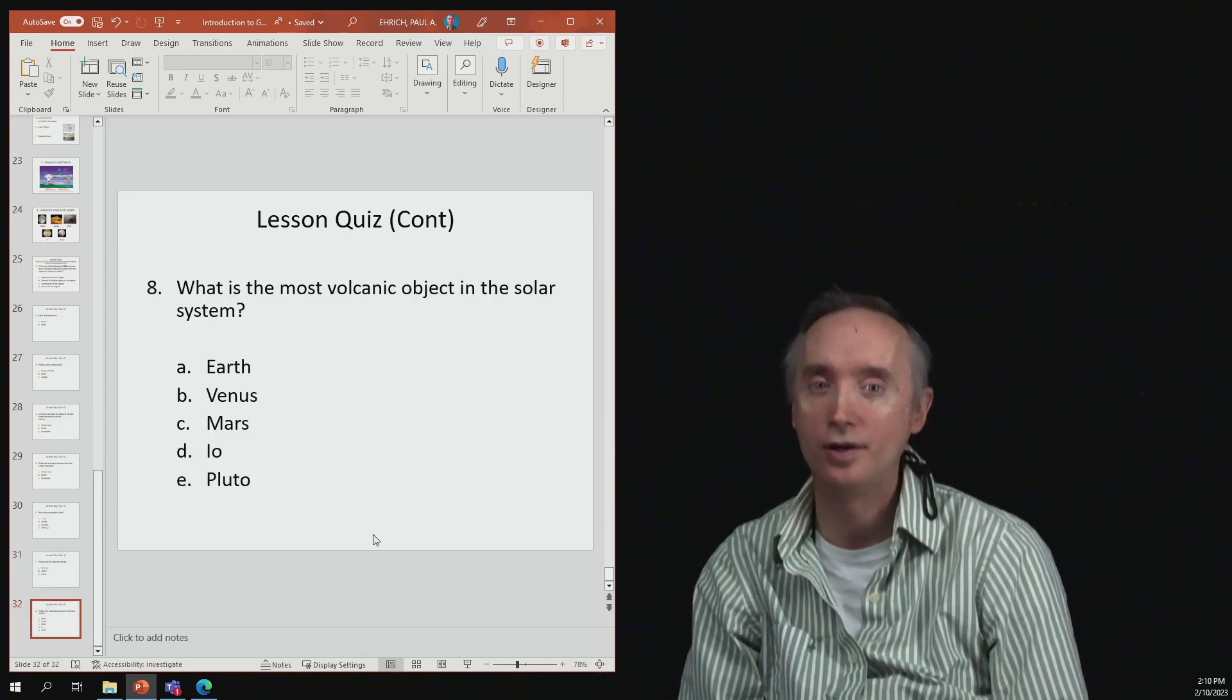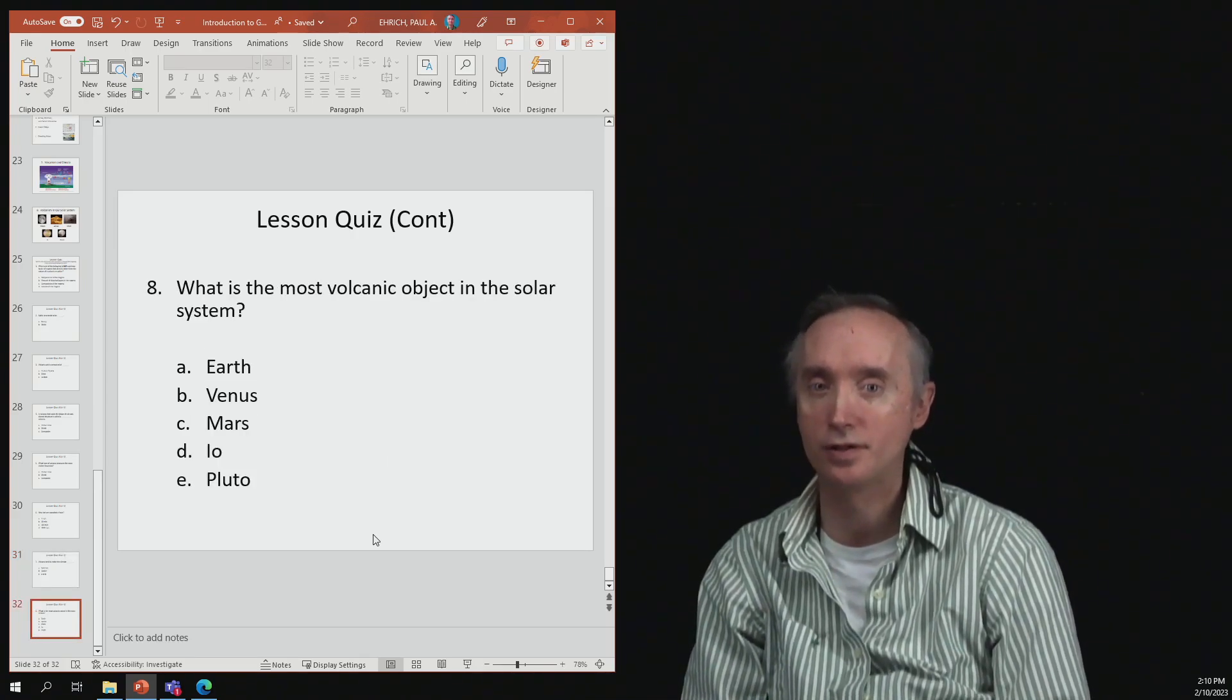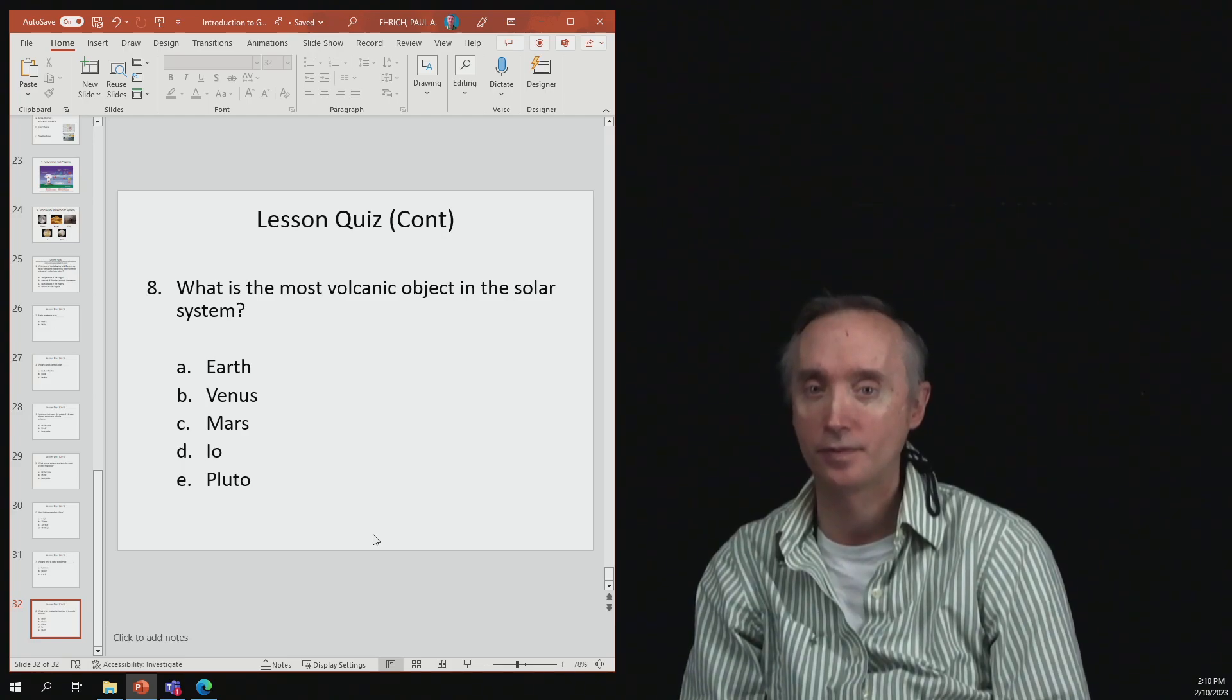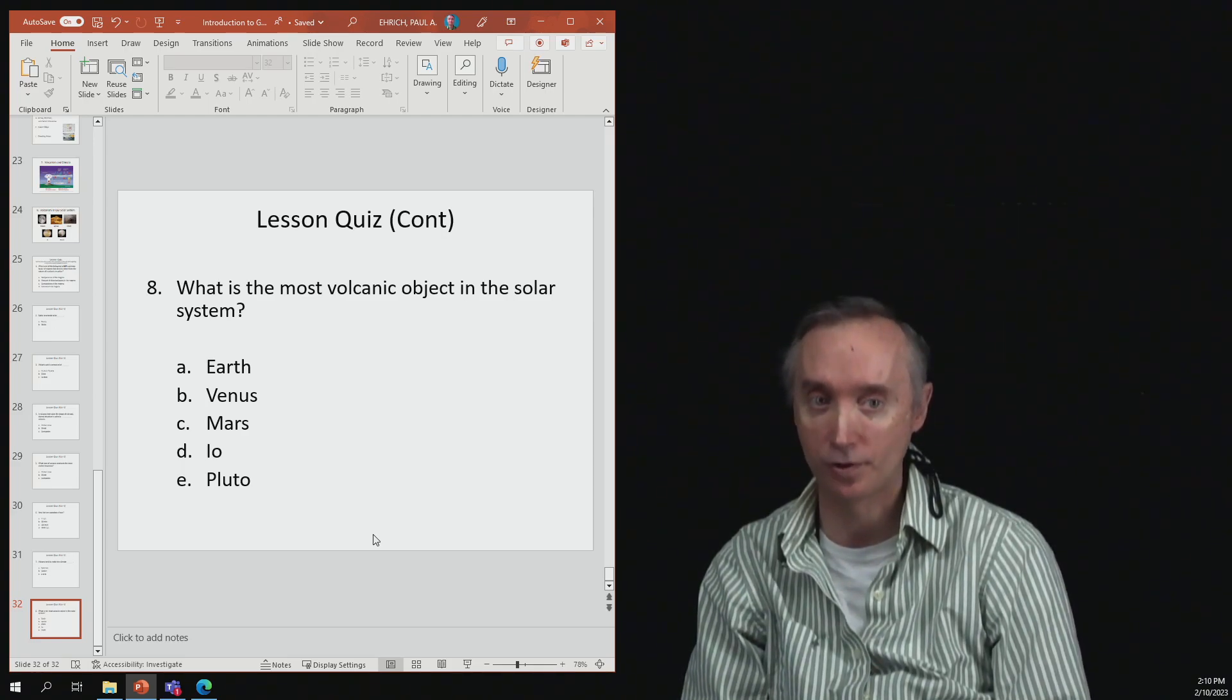Number eight: what is the most volcanic object in the solar system? That would be Io, the moon of Jupiter.